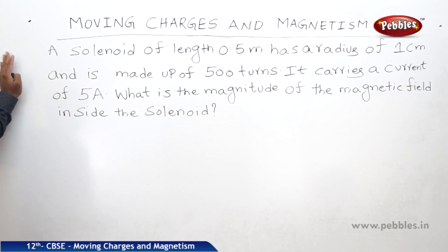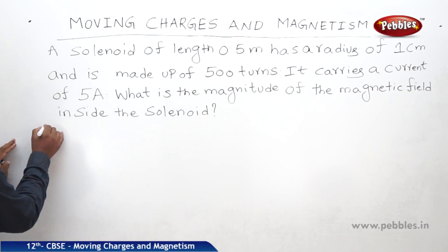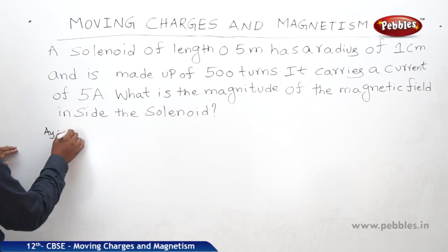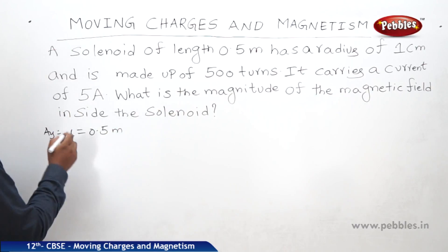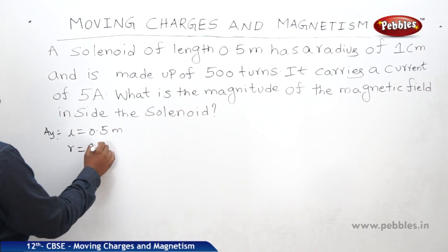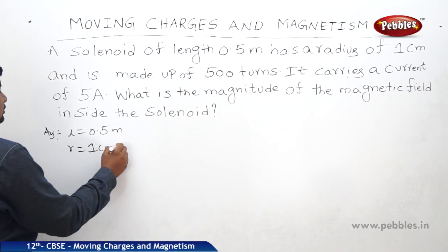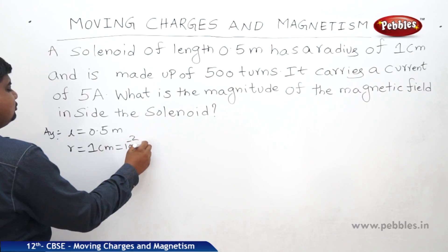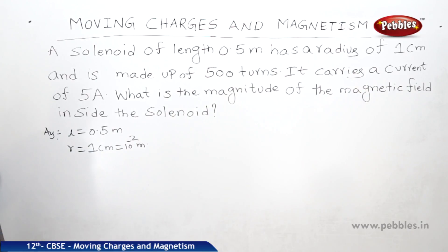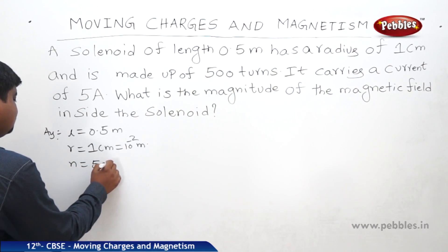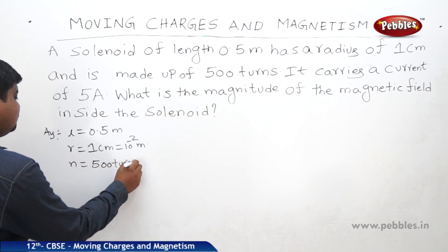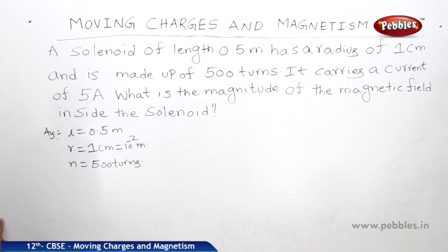Consider this problem: a solenoid of length 0.5 meters has a radius of 1 centimeter, which we can write as 10 to the power of minus 2 meters, and is made up of 500 turns. It carries a current of 5 amperes.